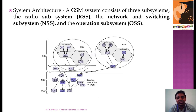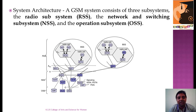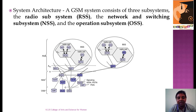Looking at the system architecture of GSM, there are three subsystems: RSS (Radio Subsystem), NSS (Network and Switching Subsystem), and OSS (Operation Subsystem), as shown in the diagram. We will discuss this in a more elaborated way in a later session.